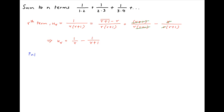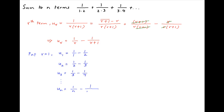Putting r equal to 1, we get the first term u1, which is equal to 1 upon 1 minus 1 upon 2. Put r equal to 2, we get u2 equal to 1 upon 2 minus 1 upon 3. And so on and so forth. Put r equal to n, we get un equal to 1 upon n minus 1 upon n plus 1.